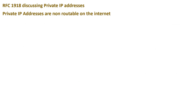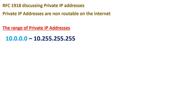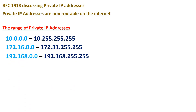The RFC, which stands for Request for Comments, number 1918, discusses private IP addresses. Private IP addresses are non-routable on the internet. The range of private IP addresses is 10.0.0.0 to 10.255.255.255, and 172.16.0.0 to 172.31.255.255, and 192.168.0.0 to 192.168.255.255.